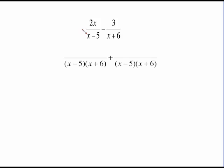Here's the step where we have to multiply by what's lacking. This has an x minus 5. What it doesn't have is an x plus 6. So we're going to multiply 2x times x plus 6. That's just distributive property. So this is 2x squared plus 12x.